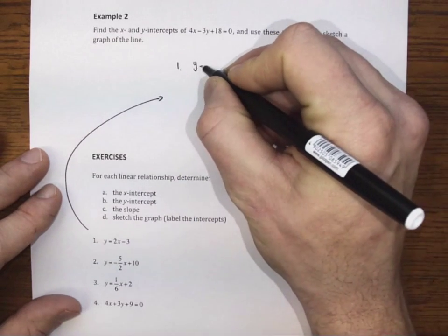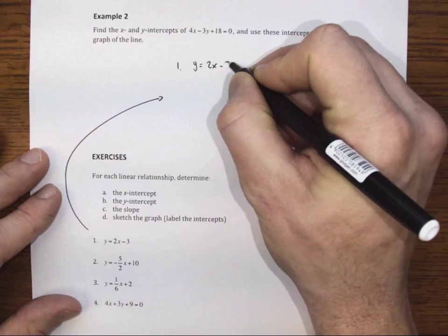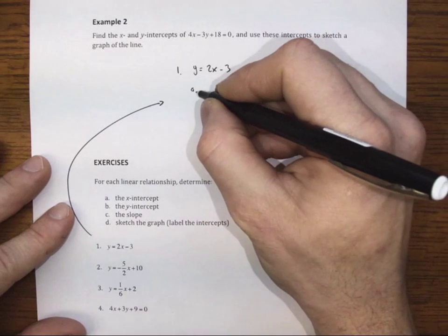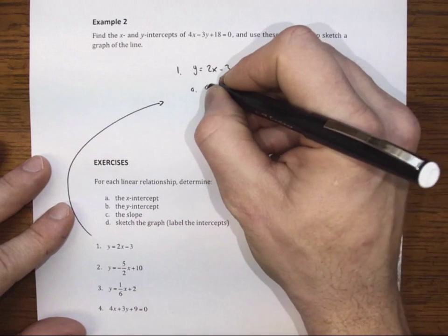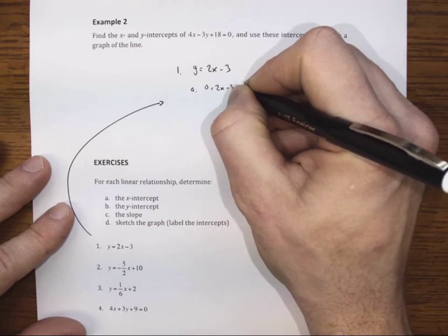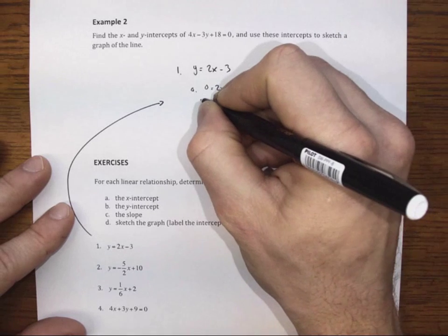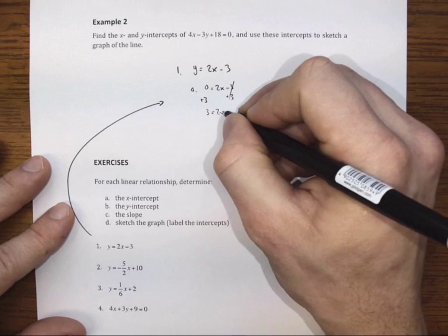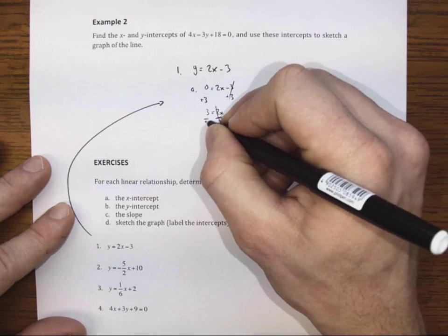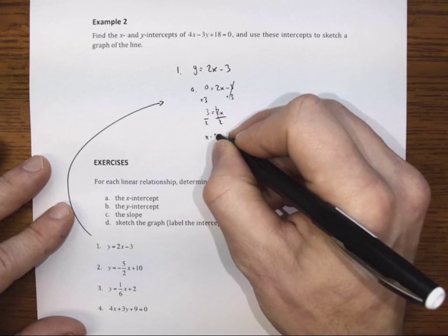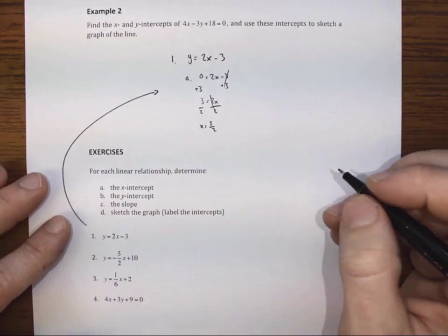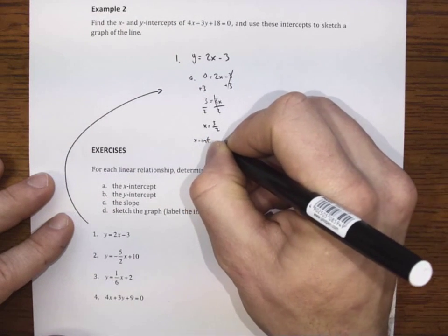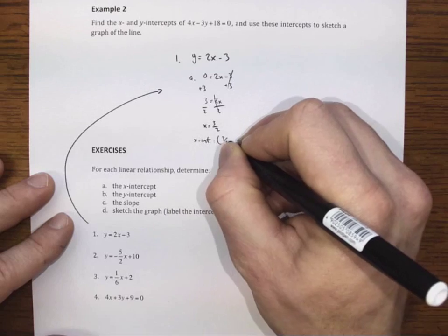So we've got the function y equals 2x minus 3. And we'll need to find the x-intercept. So to find the x-intercept, I make y equal to 0, and I solve for x. So I add 3, and that gives us 3 is equal to 2x, divide by 2, and I find that x is 3 halves. So that means the x-intercept is at the point 3 halves, 0.